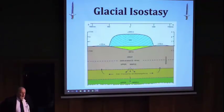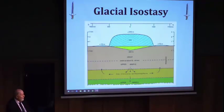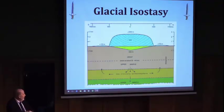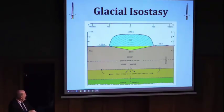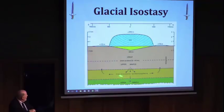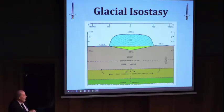This shows the tectonics involved in isostasy. You put a couple of miles worth of ice on land — it depresses the land, bulges at the edges, and depresses things down into the asthenosphere. When this ice melts, you get isostatic rebound.